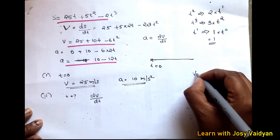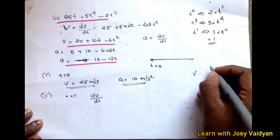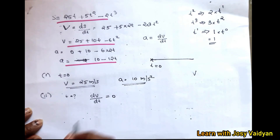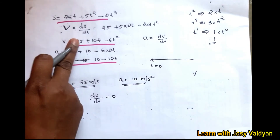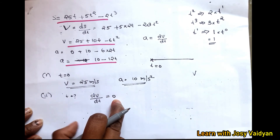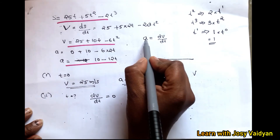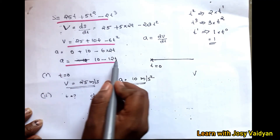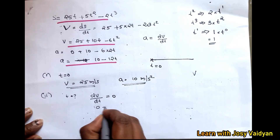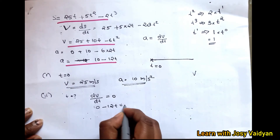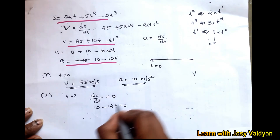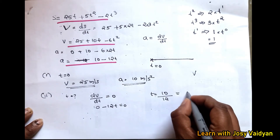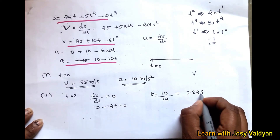Setting dv/dt equal to zero: 10 − 12t = 0. Solving for t gives t = 10 divided by 12, which equals 0.83 seconds. That answers the second question — the particle reaches maximum velocity at t = 0.83 seconds.